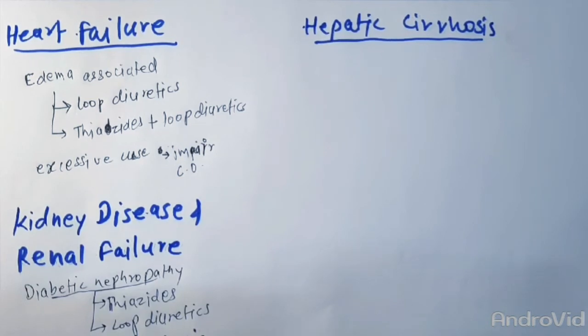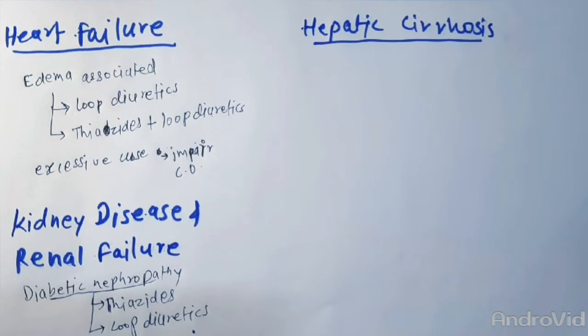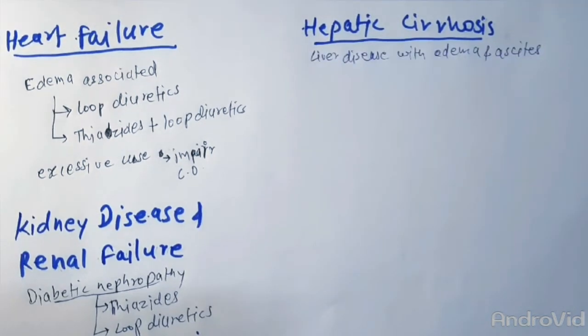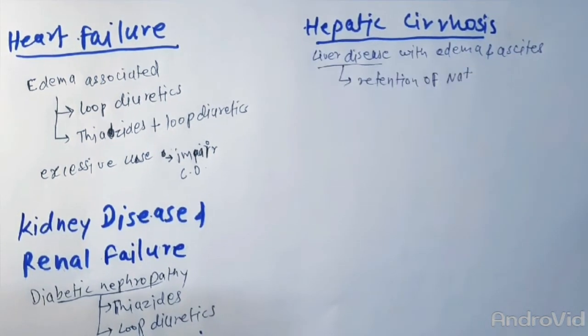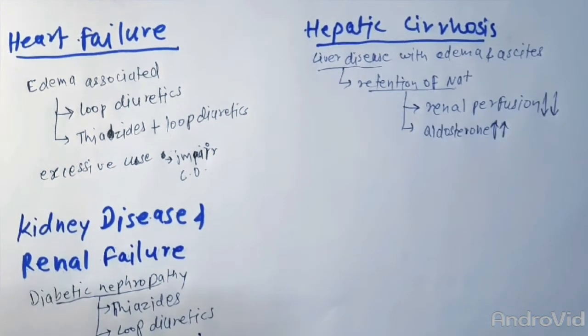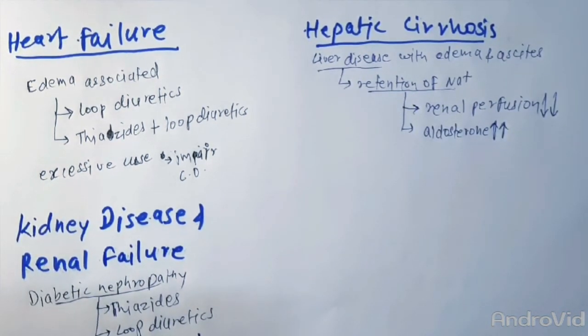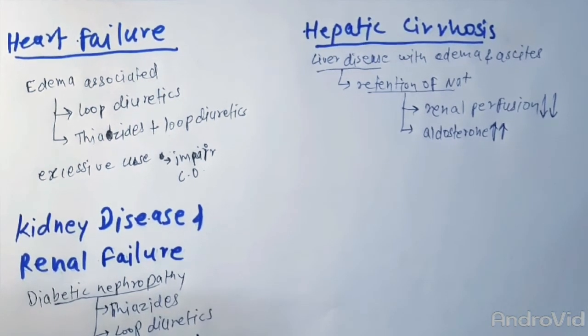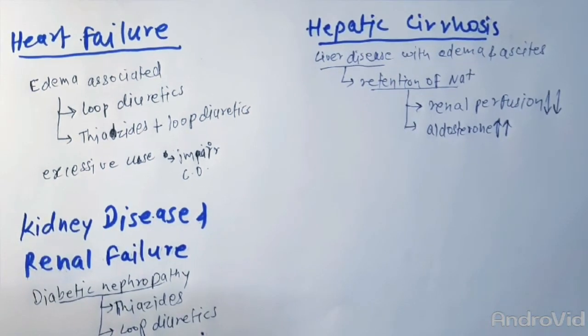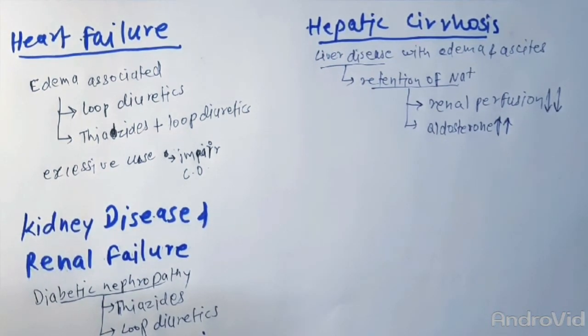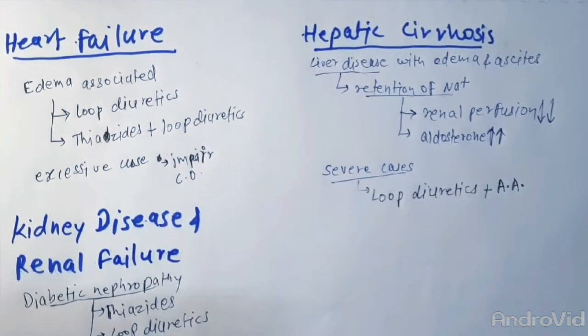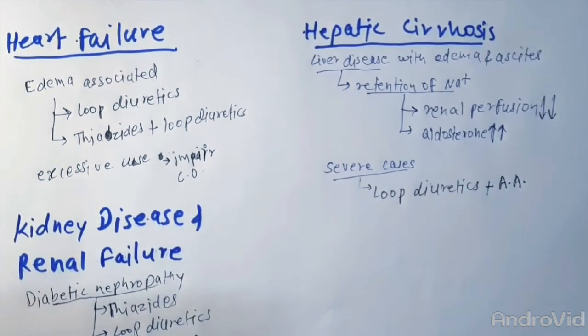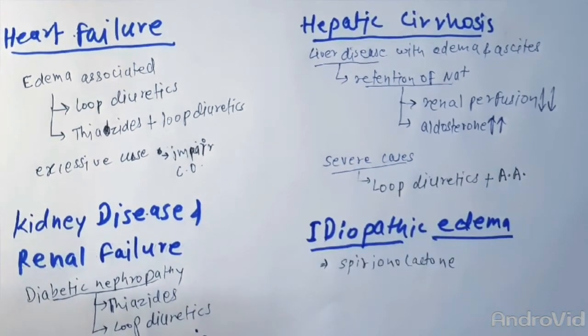In these cases, loop diuretics or thiazides can be used. Then let's talk about hepatic cirrhosis. Liver disease is often associated with edema and ascites in conjunction with elevated portal hydrostatic pressure and reduced plasma oncotic pressures. In these cases, retention of sodium takes place due to diminished renal perfusion or maybe due to increased aldosterone levels in plasma. In severe cases, we use diuretic agents. However, cirrhotic patients are resistant to loop diuretics. But in severe cases, the combination of loop diuretics and aldosterone antagonists can be used, but considerable caution is necessary. Talking about idiopathic edema, spironolactone can be used.